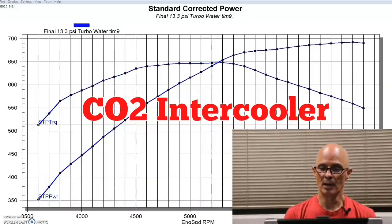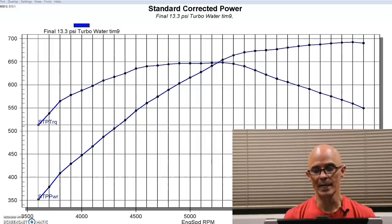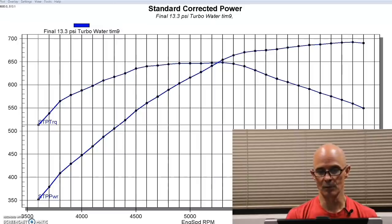This is the power output of our turbocharged 4.8 liter. This was at 13.5 or 13.3 pounds. And so it's up near 700 horsepower. This is with the air-to-water intercooler running 65 degree water. So let's take a look and see what happened when we ran.